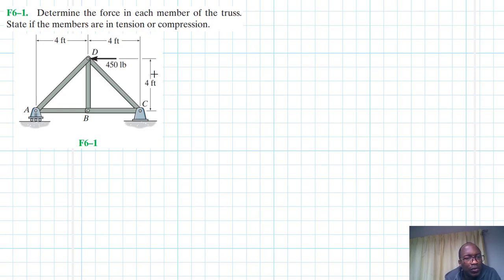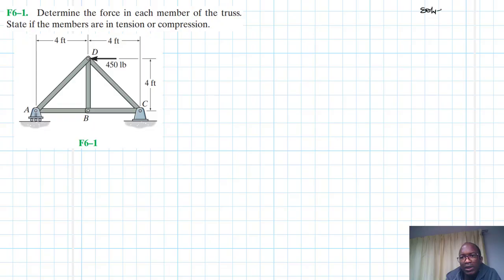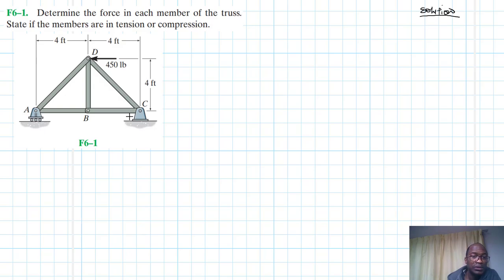Welcome to this screencast. The problem reads: determine the force in each member of the truss, and state if the members are in tension or compression. This problem is from the Engineering Mechanics Statics textbook, 13th edition by Hibbeler. We have a simply supported truss structure.